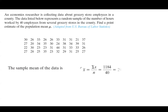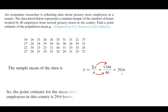The sample mean, denoted by x-bar, is the summation of all x values — which is 1,184 — divided by n, where n is 40. This gives us approximately 29.6 hours. The point estimate for the mean number of hours worked by grocery store employees in this county is 29.6 hours. But does this mean it equals the actual population mean? If someone else takes a random sample, they probably won't get the exact same 29.6, so we will use a confidence interval instead.